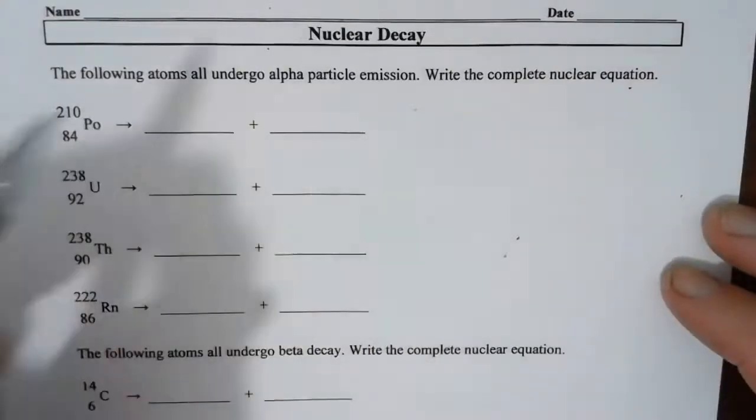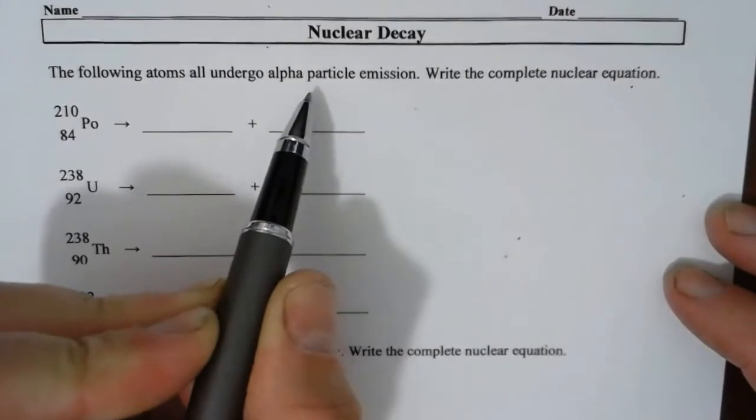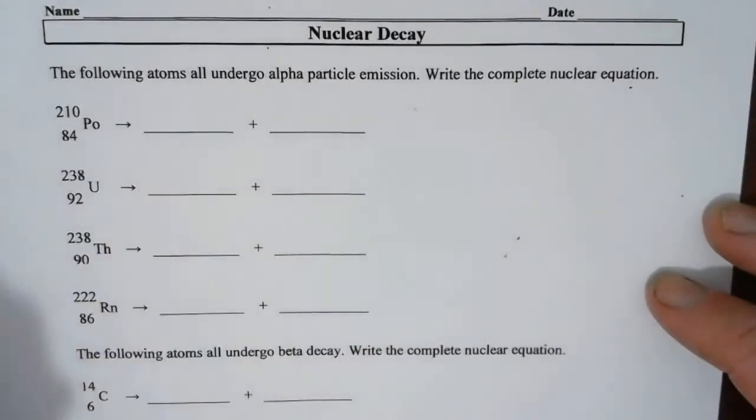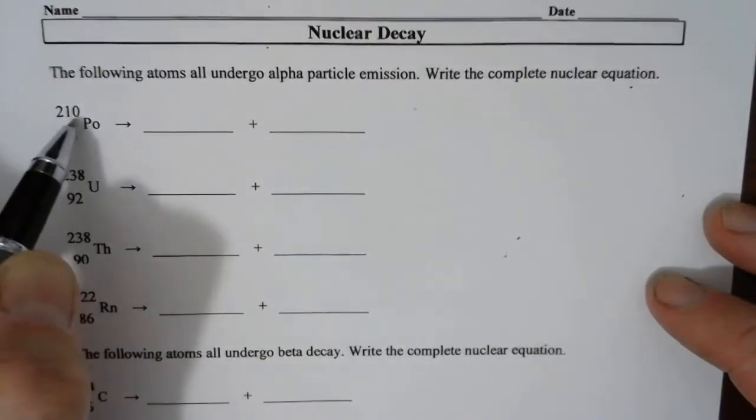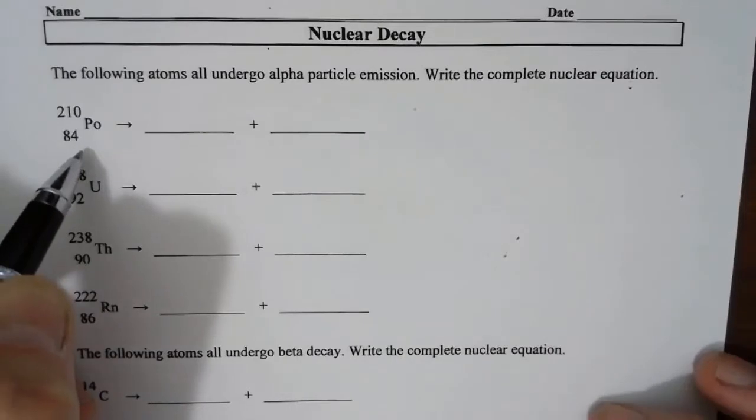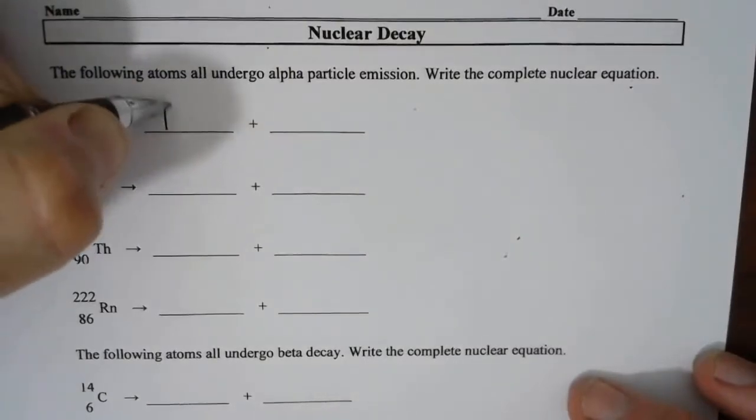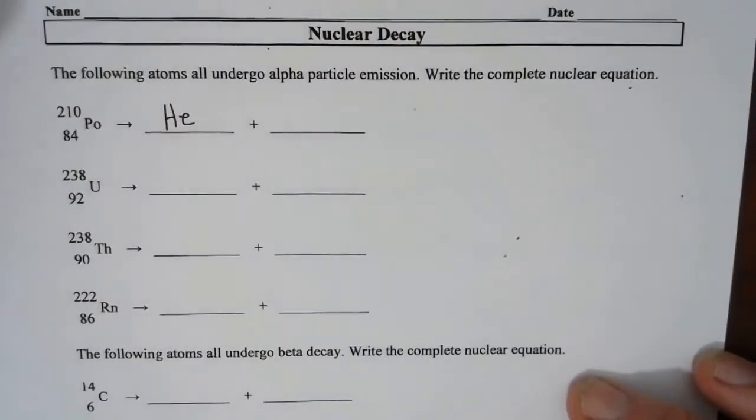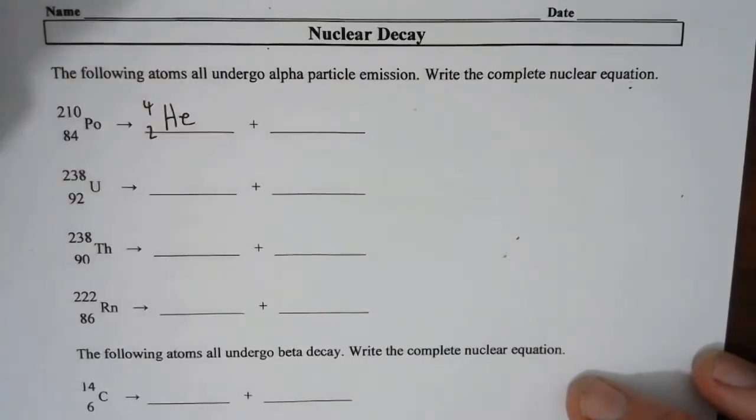Okay, so let's write the nuclear equations here. The first ones are for alpha decay. We're starting with polonium. It's got a mass of 210 and atomic number of 84. So alpha decay, we have to recall what an alpha particle is. We say that is a helium nucleus, so we express it like this.